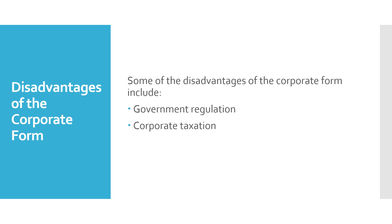Some of the disadvantages of the corporate form include government regulation and corporate taxation. Corporations have to file their Articles of Incorporation in a state and then abide by the laws of that state in administering the corporation. With regard to corporate taxation, corporations pay an income tax of around 20%. A corporation might pay income tax and then if they pay dividends, the dividends might be taxed a second time to the owners.